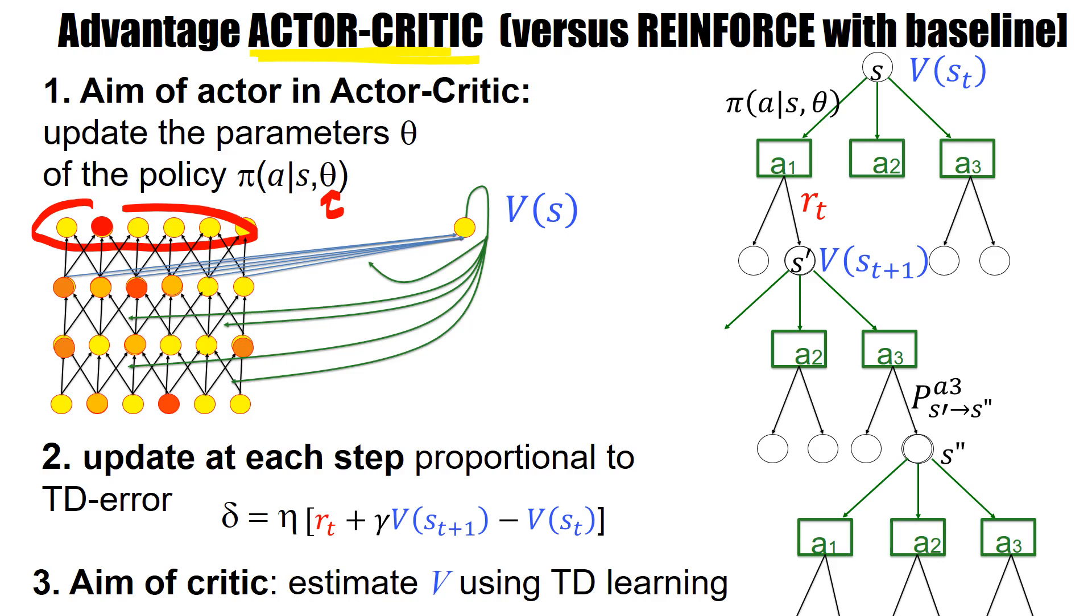Now, in this actor-critic or advantage actor-critic, the update step is proportional to the TD error: reward plus value in the next state minus the value in the current state.